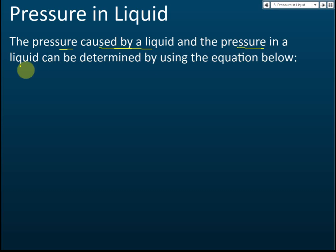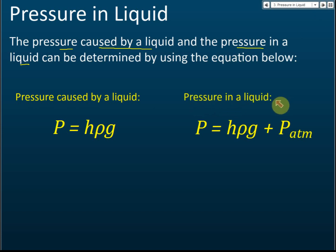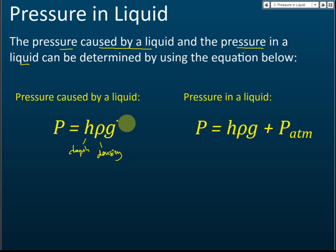Pressure caused by a liquid and pressure in a liquid are not the same. Pressure caused by a liquid is given by the formula p = hρg, since pressure is directly proportional to depth, density, and gravitational field strength. Pressure in a liquid is given by p = hρg + p_atm, where p_atm is the atmospheric pressure. Here, h is depth, rho is density, g is gravitational field strength, and p_atm is atmospheric pressure.